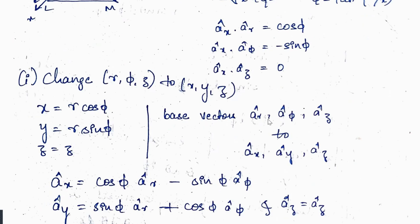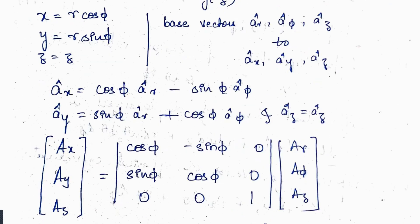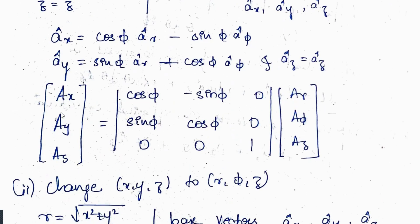For base vector conversion from cylindrical to Cartesian: âx = cosφ·âr − sinφ·âφ, ây = sinφ·âr + cosφ·âφ, and âz = âz. Writing this in matrix form, the transformation matrix has elements: [cosφ, −sinφ, 0; sinφ, cosφ, 0; 0, 0, 1]. Multiplying this matrix by the cylindrical constants Ar, Aφ, Az gives the Cartesian form.